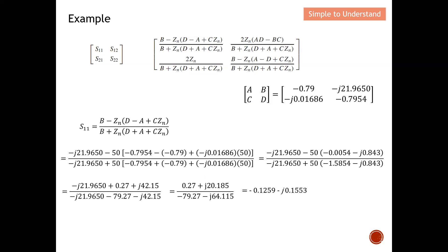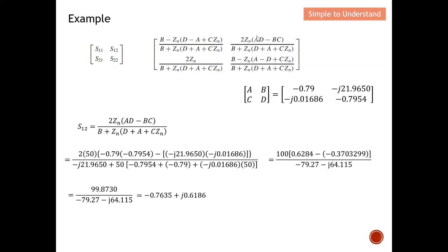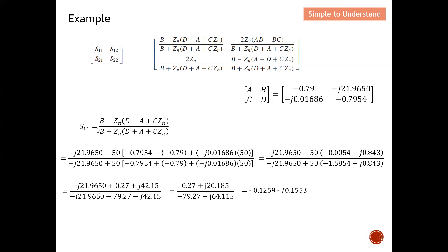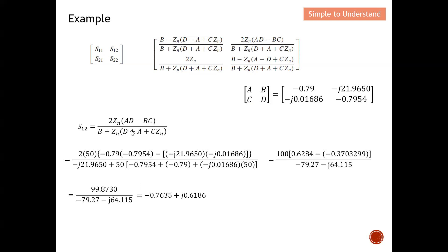For S12, the formula is: 2 multiplied by Z0 (which is 50), divided by the same denominator calculated earlier. The numerator also includes A·D minus B·C. Since the denominator is the same as before, I just copy that chunk and concentrate on computing the top term. From there I obtain the overall S12 value.